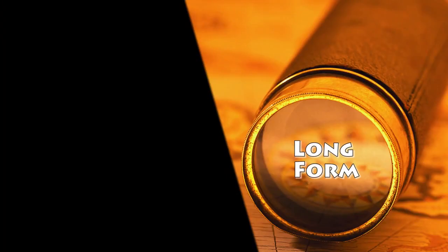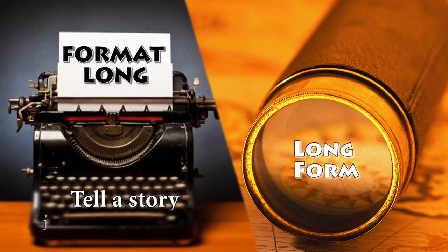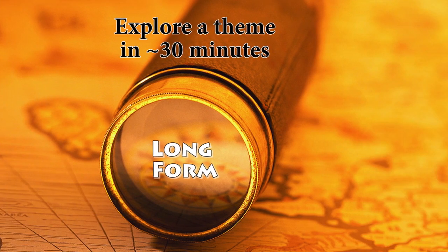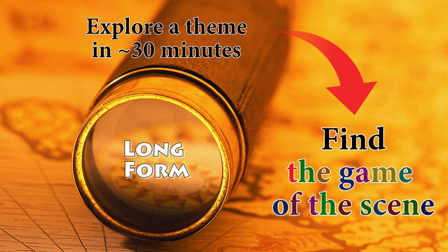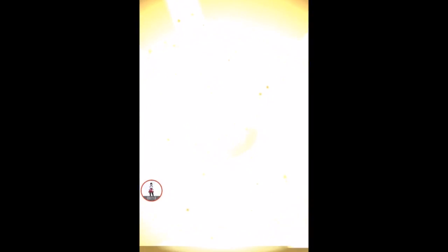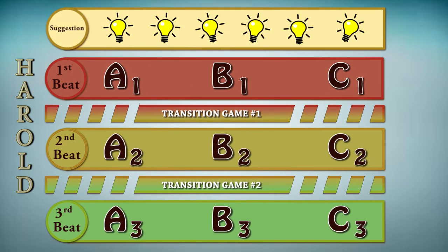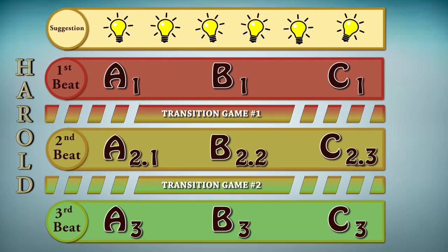The Harold is what we call a long form, which is different from a long format. The long format is an improvised story that lasts between 30 minutes and one and a half hours. The long form is the term coming from the school of Chicago to talk about a 30-minute format that explores a theme. This exploration is done through games of the scene. Because if this format were a Pokémon, each troupe has a different version of the Harold. Some skip the introduction, others add a conclusion, you can start the second beat with the same scene — the Harold has many variations itself.